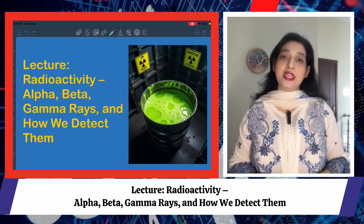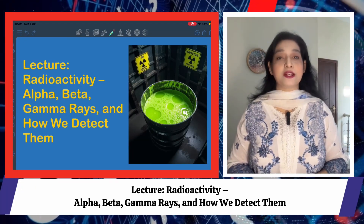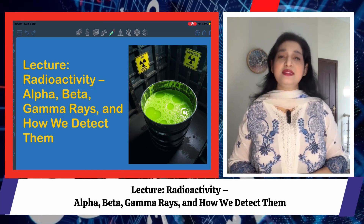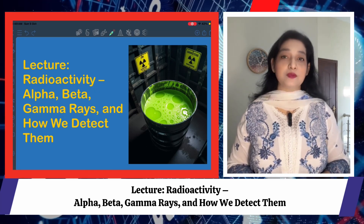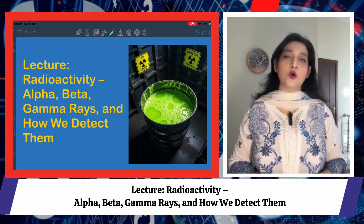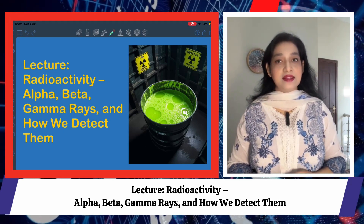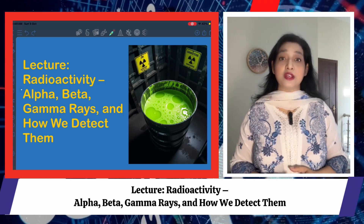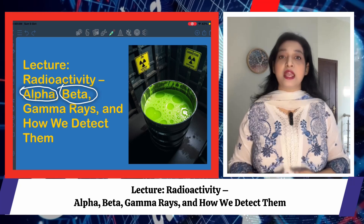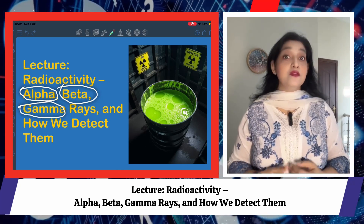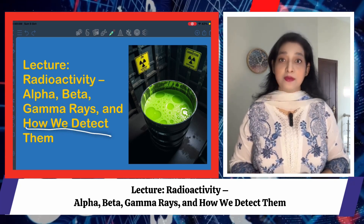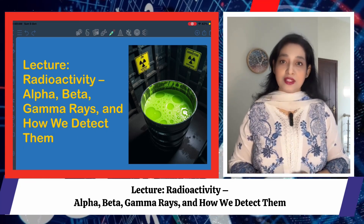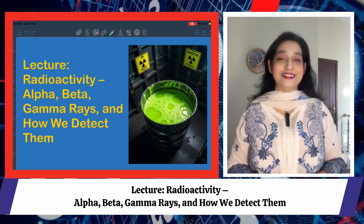Hello everyone, welcome back. Today is day two of our topic atomic structure, and today we will discuss radioactivity. This is a fascinating topic that explains how some atoms can go unstable and release energy in surprising ways. We will focus on the three main types of radioactive emissions: alpha, beta, and gamma particles or rays. We will also talk about how scientists detect them. I will keep it simple with everyday analogies and no heavy mathematics. Let's dive in.